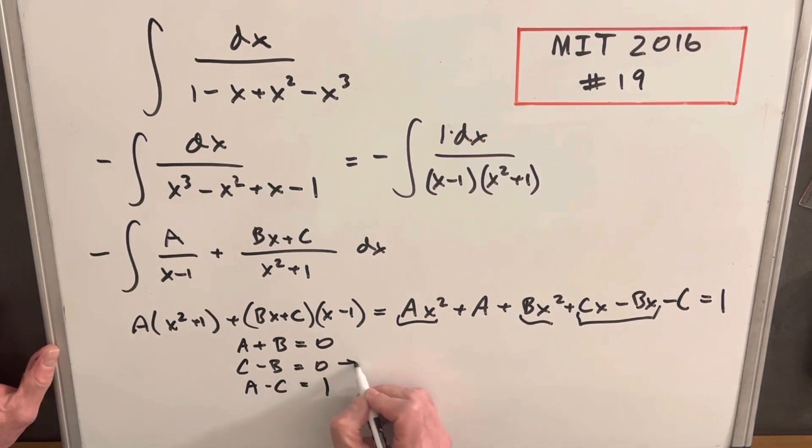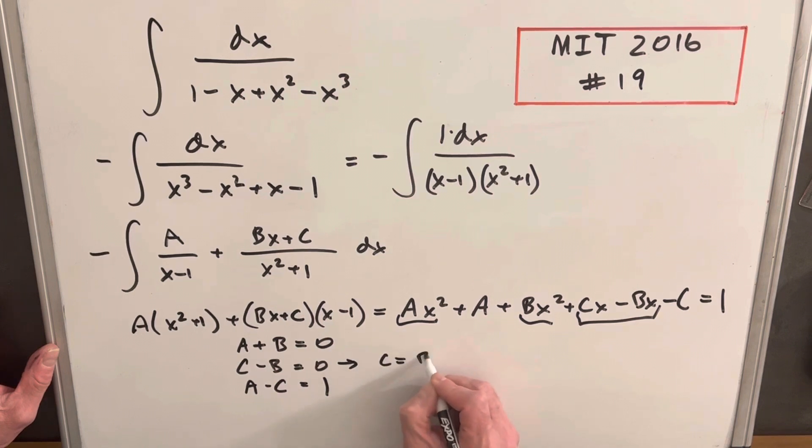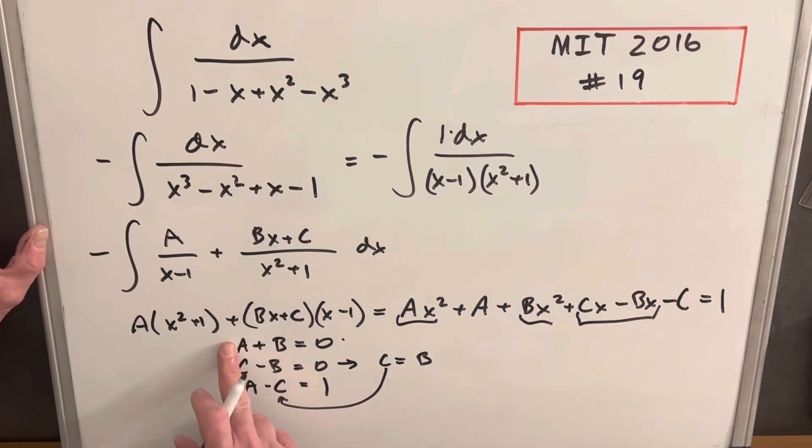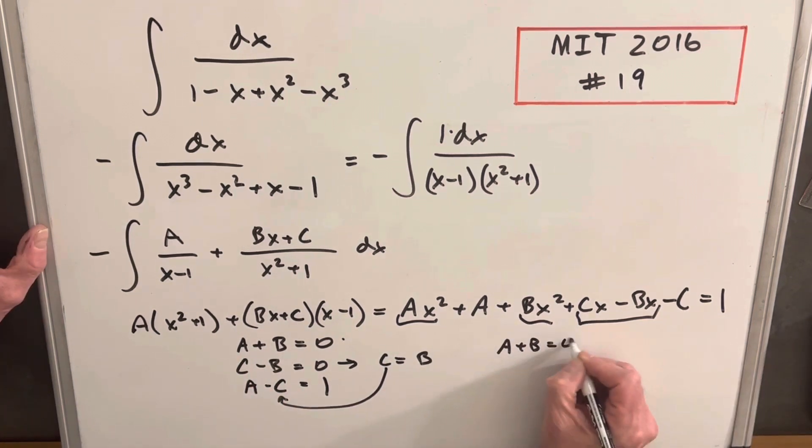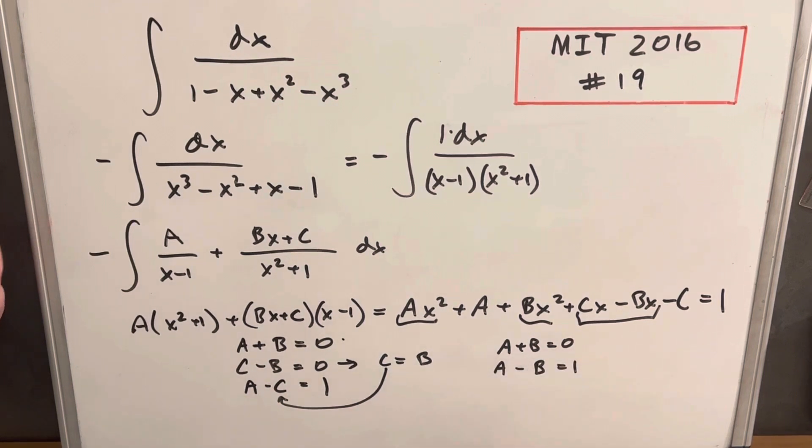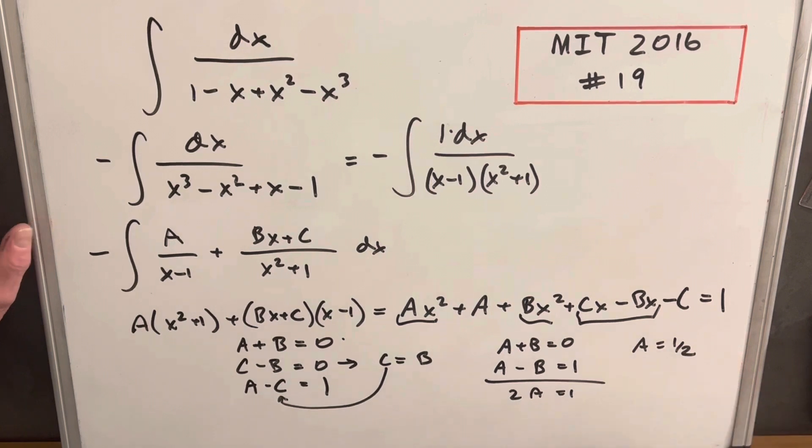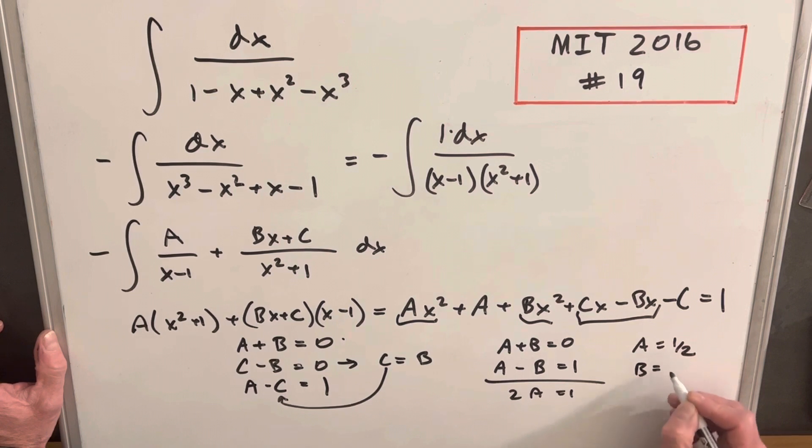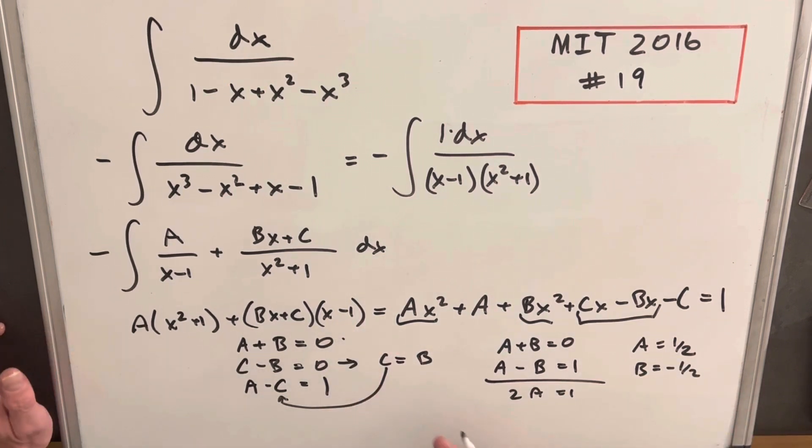And then what I can do is use this second equation and say that C must be equal to B, if when we subtract them, they're 0. But that allows me to replace, I can do a quick substitution. I can put a B in right there. So let's use our first equation, A plus B equals 0. And then our last equation, but with this substitution made, A minus B equals 1. Add them together, 2A equals 1. So A equals 1 half. Then from there, we could just use this first equation. If A is 1 half, B has to be minus 1 half in order for it to be 0. But C equals B. So we have all three of our values.